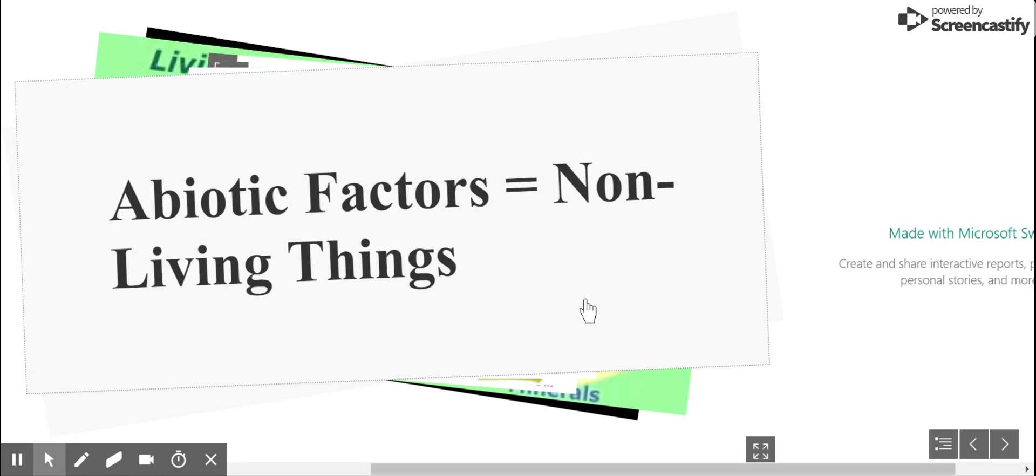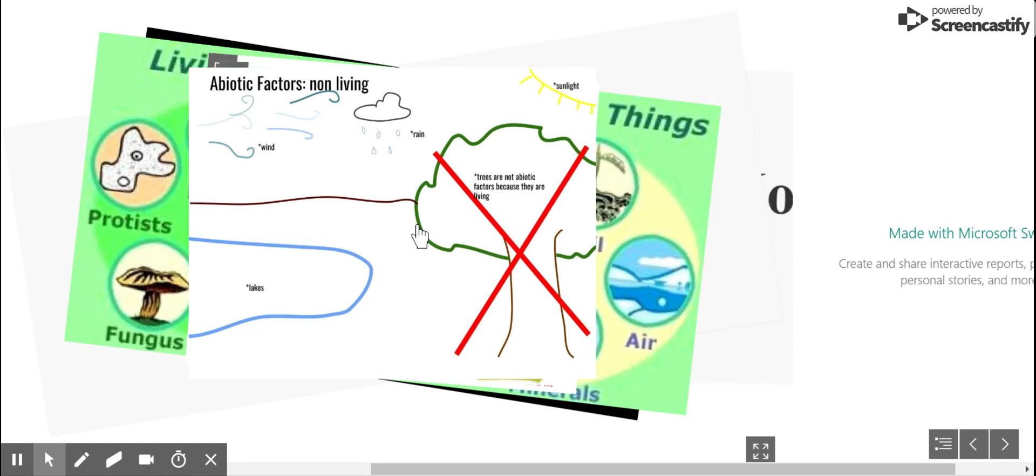Abiotic factors are non-living things. This is wind, lakes, rain, sunlight. Remember, trees are not abiotic factors because they are living.